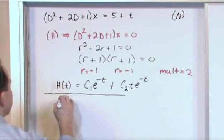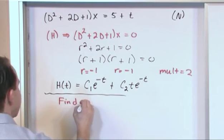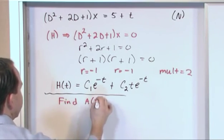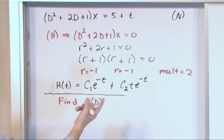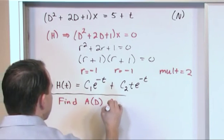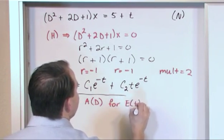an annihilator, I'm going to call it a of d, which means, it just means some derivatives, that's all it means, for e of t, in this case, e of t.